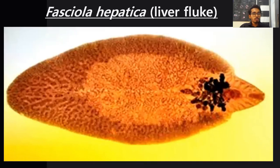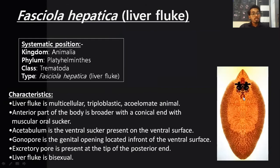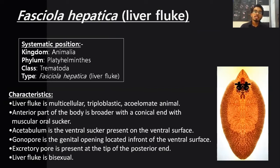Moving on to Fasciola hepatica, also called liver fluke. This is how the liver fluke looks under a permanent slide. The systematic position: it belongs to kingdom Animalia, phylum Platyhelminthes, class Trematoda; the type specimen is Fasciola hepatica and the common name is liver fluke. It belongs to phylum Platyhelminthes because these are flatworms — they are dorso-ventrally very flat.